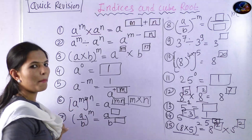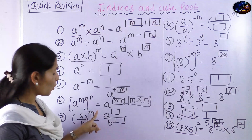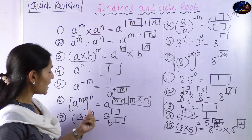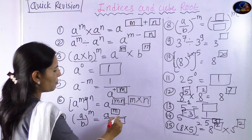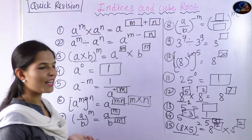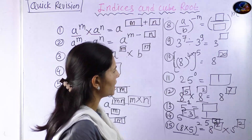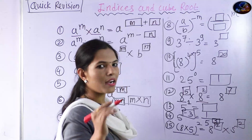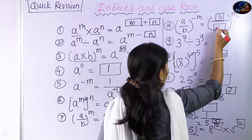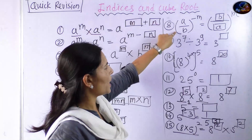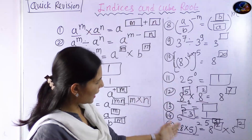Another rule: a upon b, the whole raised to m, is equal to a raised to m divided by b raised to m. How simple is this rule! And for the negative version: a upon b raised to minus m is equal to b upon a raised to plus m. These are all the rules with good examples for us to solve.